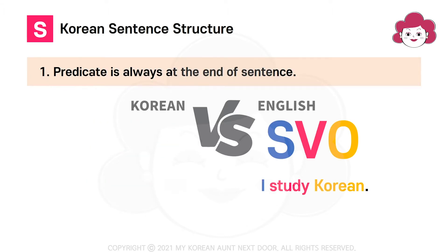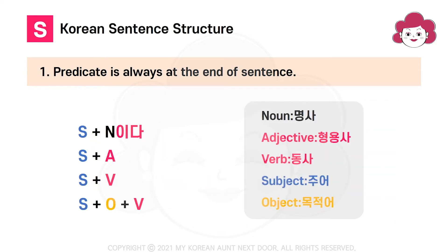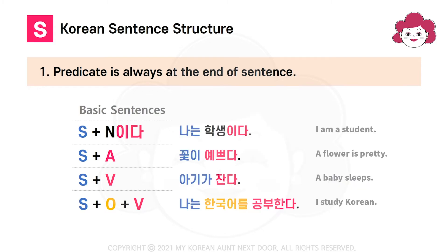Number 1: Predicate is always at the end of the sentence. These are the basic Korean sentence formats: Subject plus noun 이다. Subject plus adjective. Subject plus verb. Subject plus object plus verb.